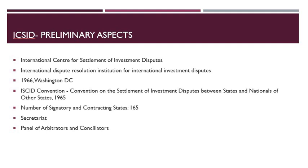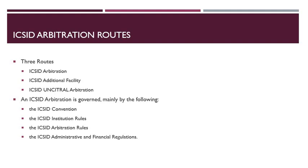It established an international dispute resolution institution for international investment disputes. The institution was established in 1966 at Washington DC. It has a secretariat and a panel of arbitrators and conciliators. The total number of signatory and contracting states is about 165. There are three routes of arbitration under the aegis of the ICSID: one is ICSID arbitration, two is arbitration under the ICSID additional facility, and three is ad hoc arbitration under the ICSID.